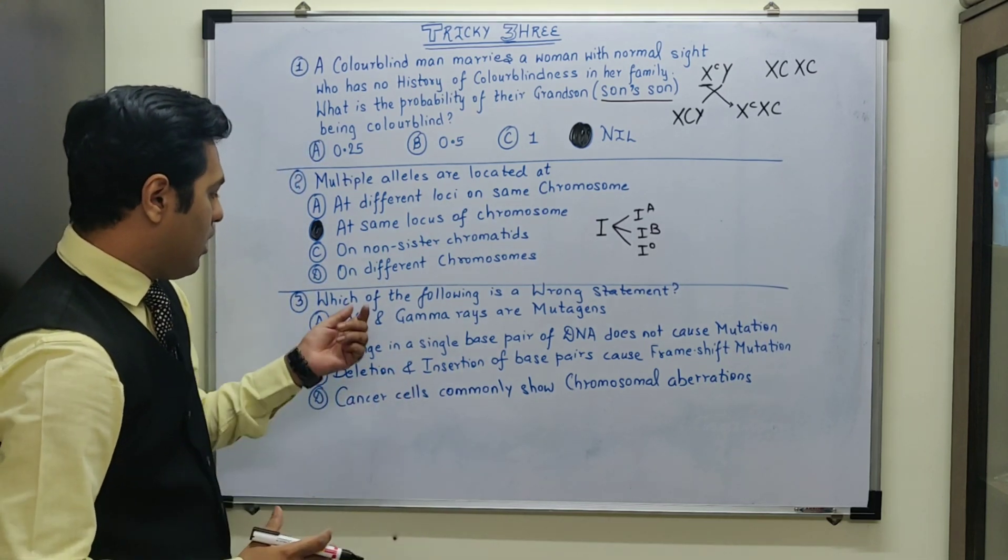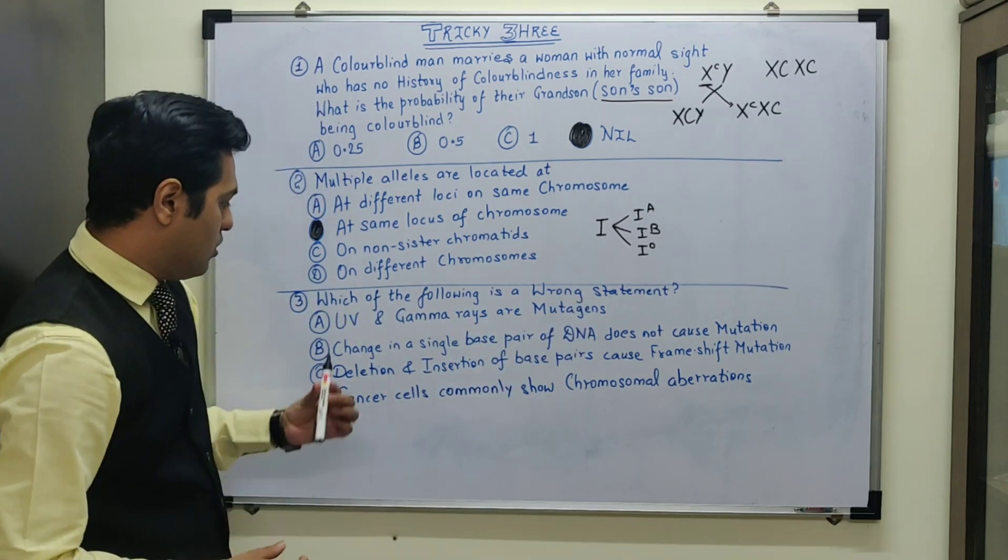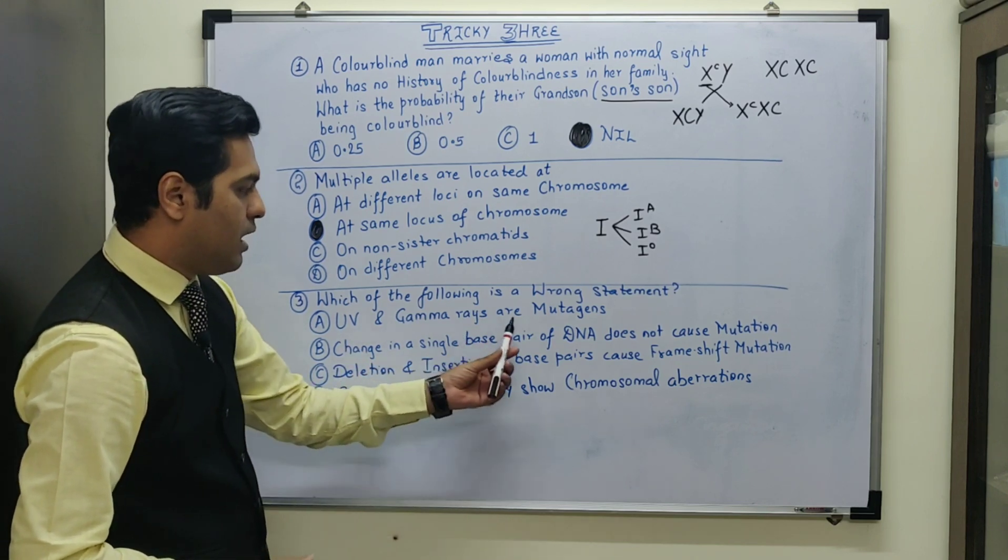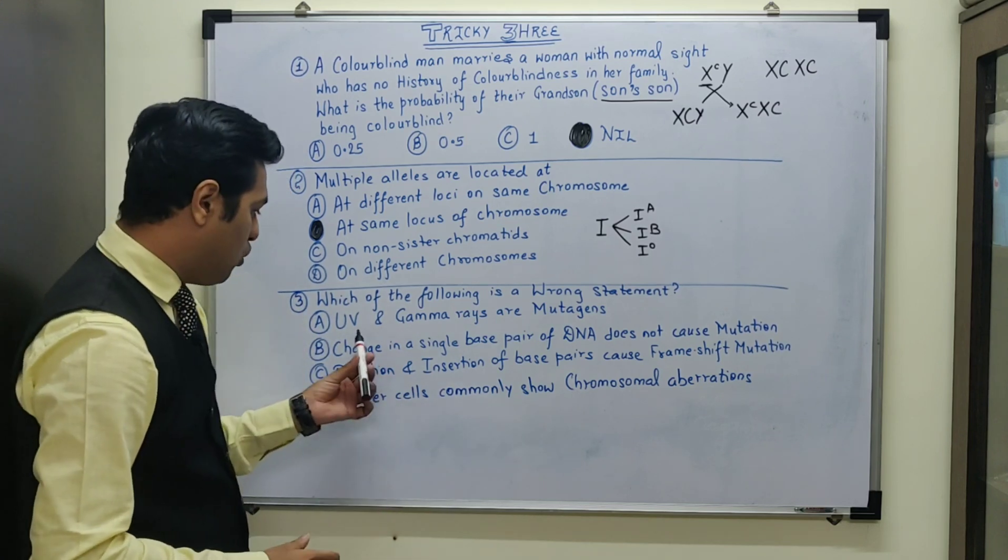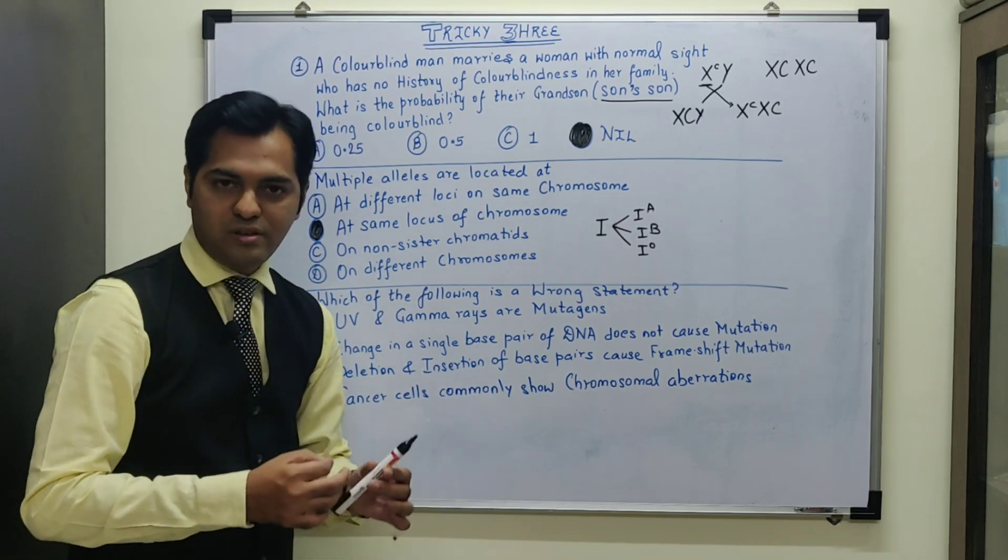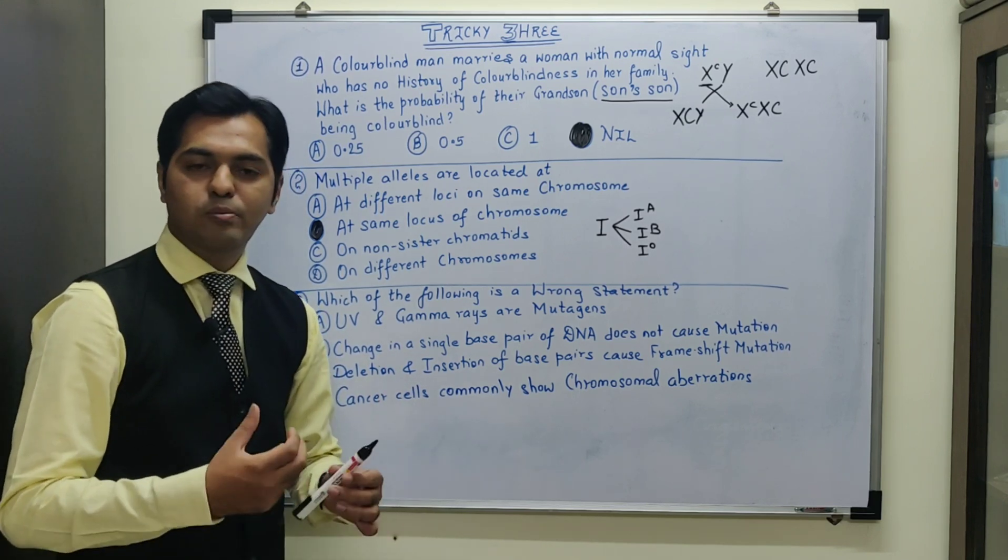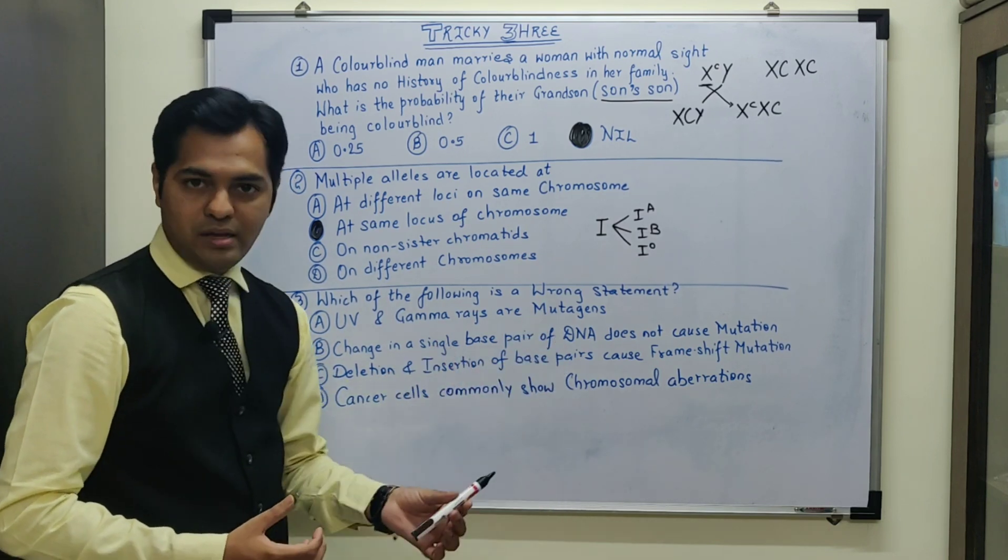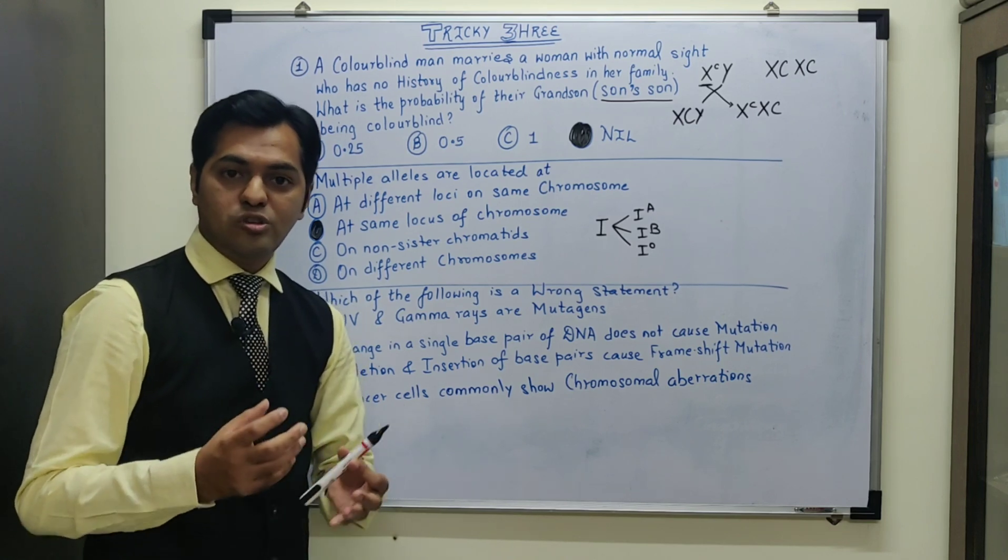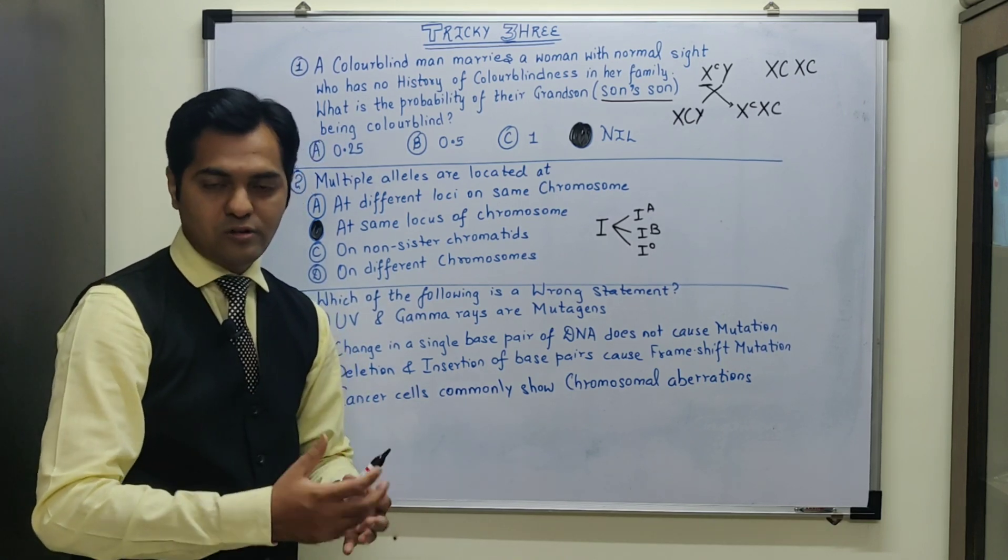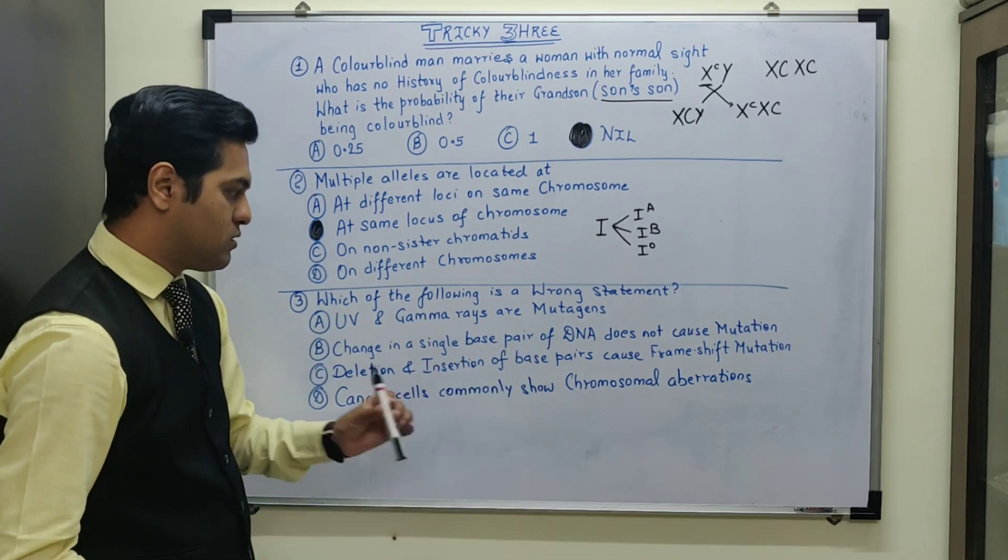Moving to the next MCQ, what has been asked is which of the following is the wrong statement. So statement A is UV and gamma rays are considered as mutagens. Definitely this is a correct statement. UV rays are definitely non-ionizing radiations but they are absorbed by DNA or skin cells and definitely they create mutations. So they are mutagens. Even gamma rays, in fact these are ionizing radiations. They cause an effect on the nitrogenous base pairs and they convert them into ions creating forbidden base pairing, and that is how both of them are mutagens. So this is a correct statement.